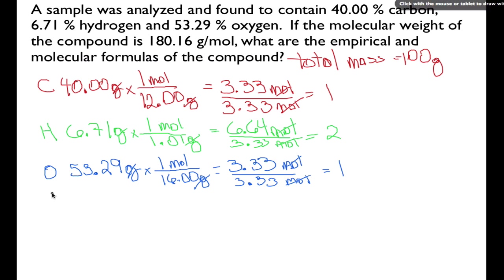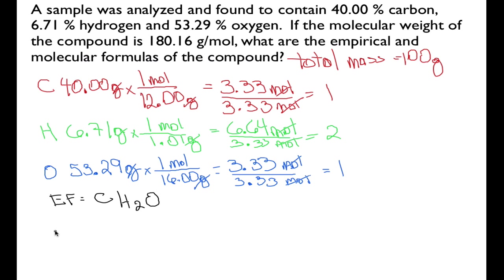So now we can write down our empirical formula. The empirical formula for our compound is C₁H₂O₁, or simply CH₂O. Now we want to get the molecular formula. In order to get the molecular formula, we have to compare the molecular weight to the empirical formula weight.